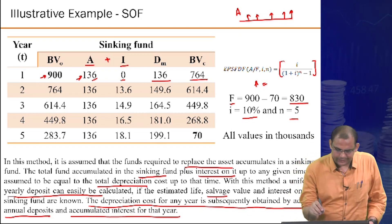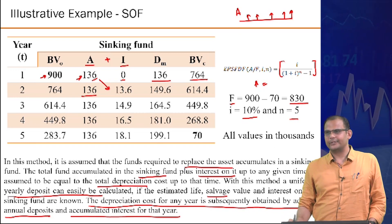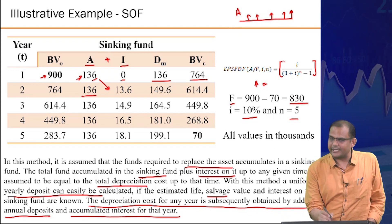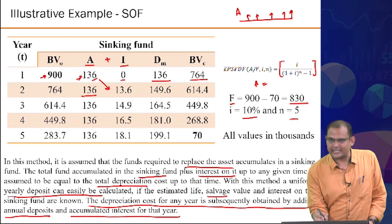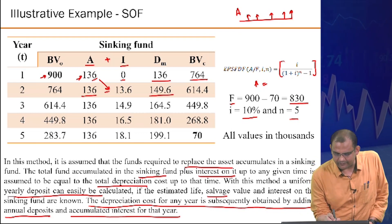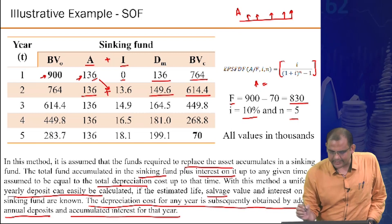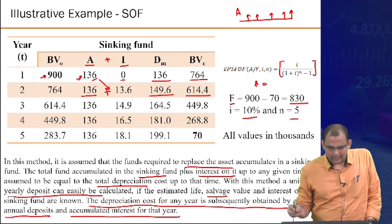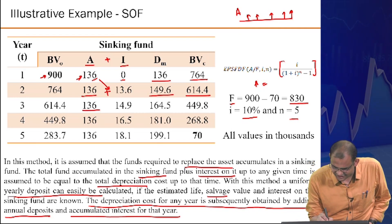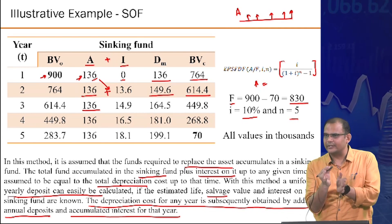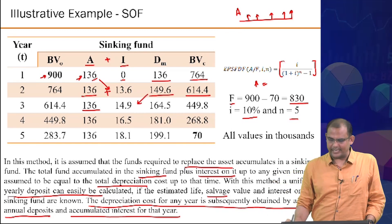Year 2: A remains 136. The 136 deposited in year 1 has now earned 13.6 in interest (10%), so total depreciation = 136 + 13.6 = 149.6. Book value = 764 minus 149.6 = 614.4. Year 3: A = 136, accumulated interest from prior deposits = 14.9, total depreciation = 136 + 14.9 = 150.9 approximately.